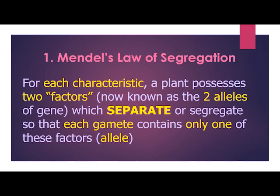Mendel's law of segregation: for each characteristic, a plant possesses two factors — now known as the two alleles of a gene — which separate or segregate so that each gamete contains only one of these factors.